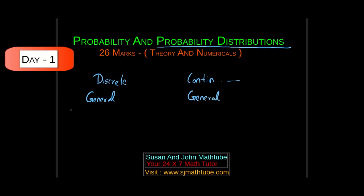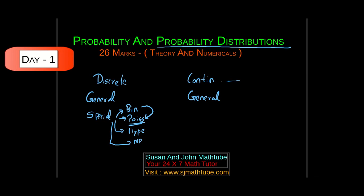Then come the special cases. The special cases in discrete are: binomial, Poisson, Poisson approximation for binomial, hypergeometric, and finally negative binomial.